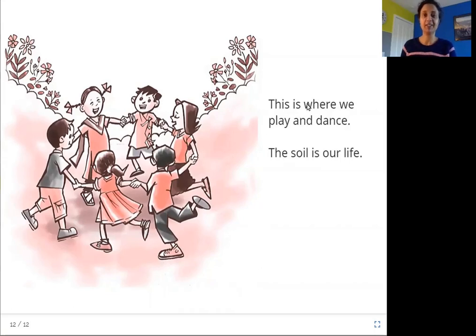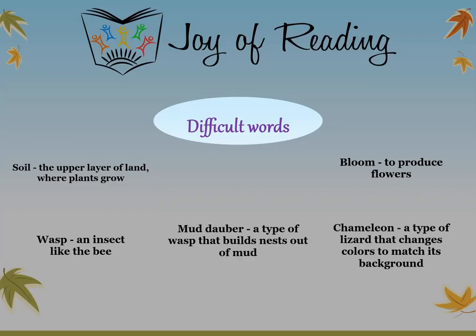I hope you enjoyed this story. The difficult words in this story are: Soil — the upper layer of land where plants grow. Bloom — to produce flowers. Wasp — an insect like the bee. Mud dauber — a type of wasp that builds nests out of mud. Chameleon — a type of lizard that changes colors to match its background.